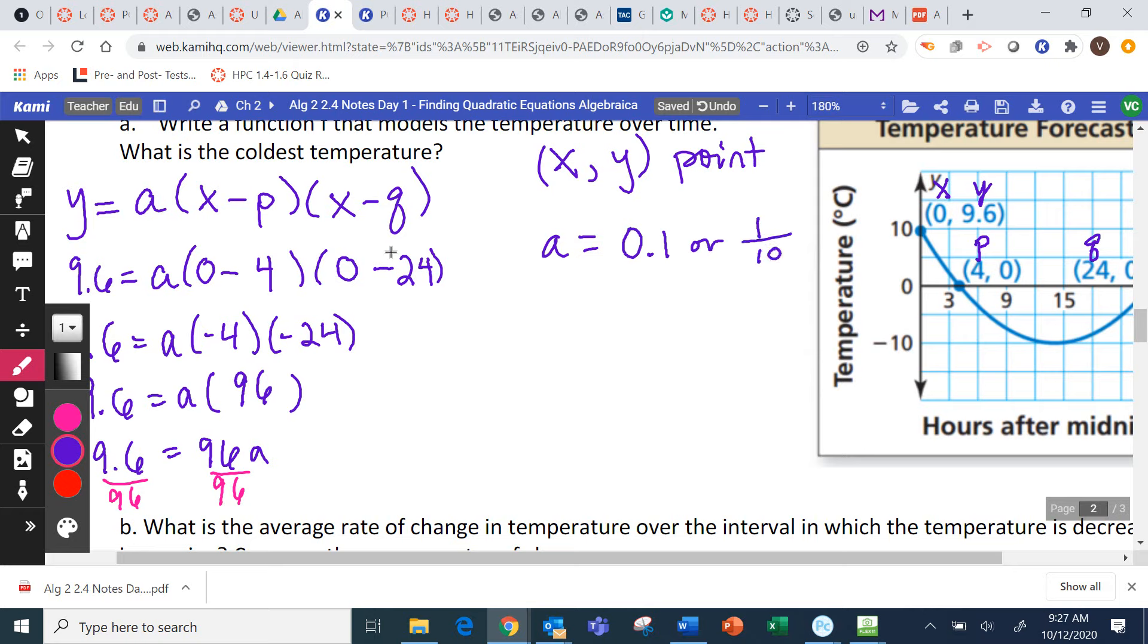0.1. What is that as a fraction? 1/10. So, now we're going to rewrite the equation. But, we're going to plug in A, P, Q only. So, we do not plug in the X, Y. We just leave it as X, Y for the variables. So, we will have Y equals, our A value is 1 tenth, parenthesis. We leave X as X. We subtract 4. Then, we do X minus 24. And, we have our equation in intercept form.